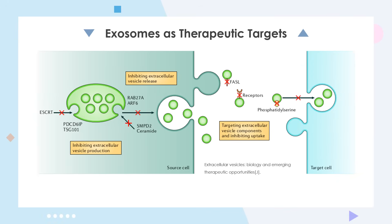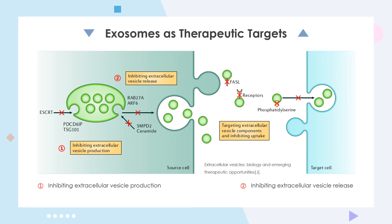The above-mentioned pathological conditions indicate that disease progression can be reduced by specifically inhibiting the production or release of extracellular vesicles, or by targeting extracellular vesicle components and inhibiting their uptake. First, inhibiting EV production by blocking ceramide formation, treating production cells with amiloride, or interfering with syntaxin interactions or blocking 4-transmembrane proteins. Second, blocking certain RAB GTPases or ARF6 can reduce the release of extracellular vesicles. Third, blocking extracellular vesicle binding receptors, lipids mediating EV uptake, or cell surface receptor signaling can also be advantageous.